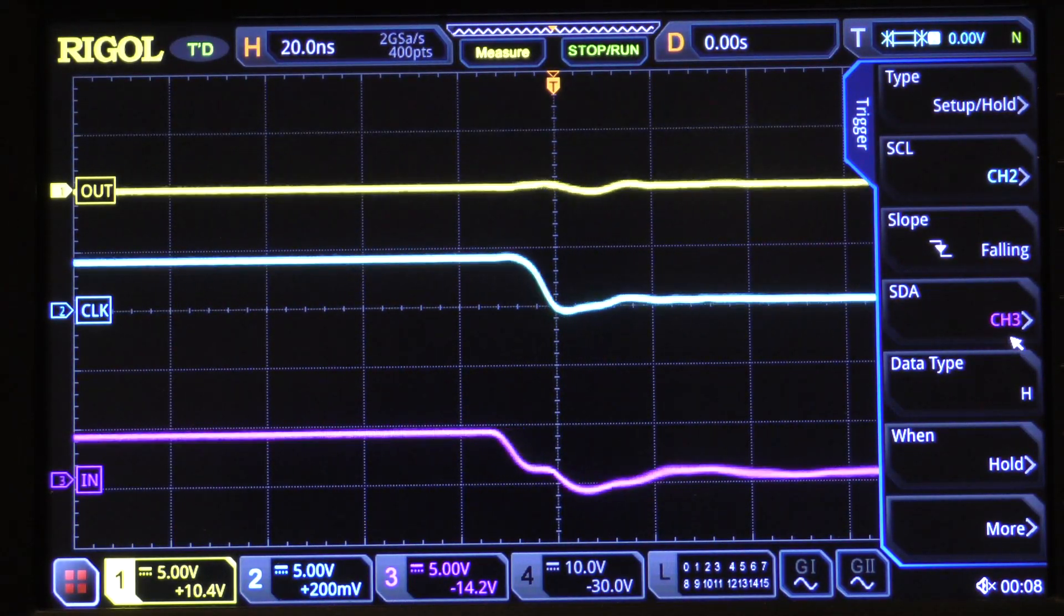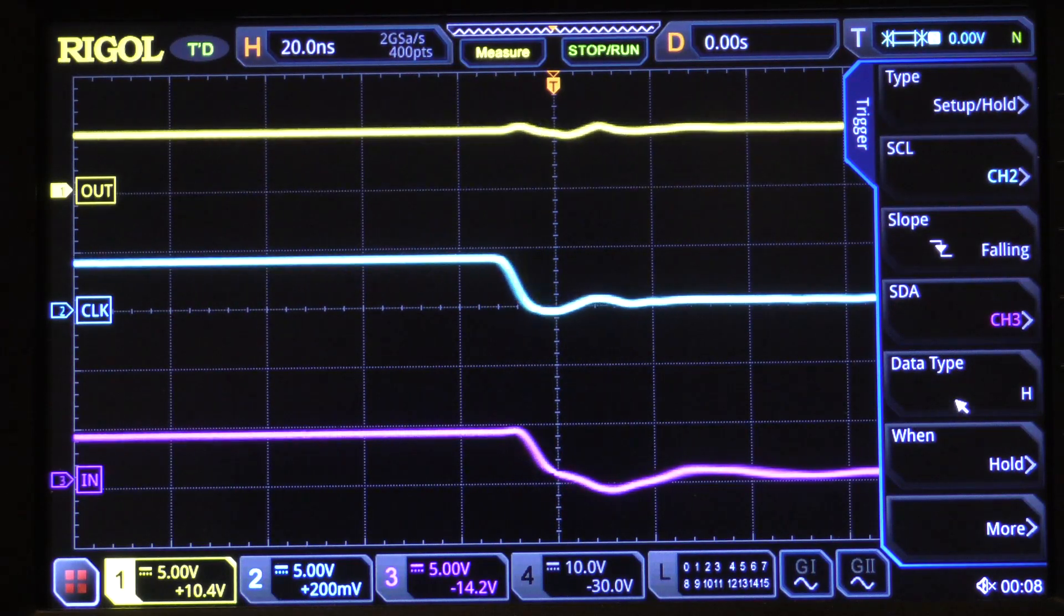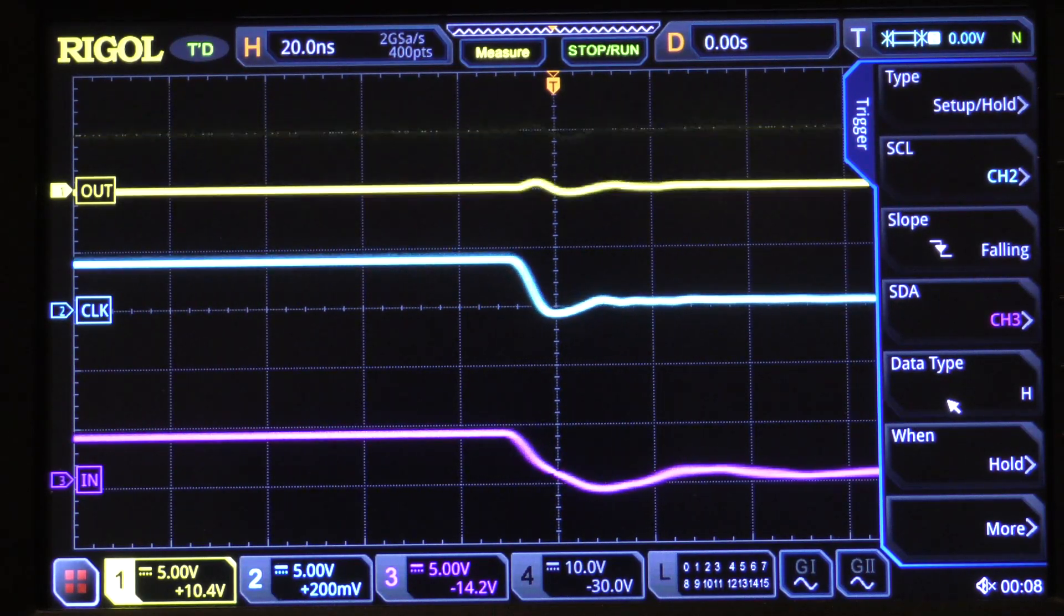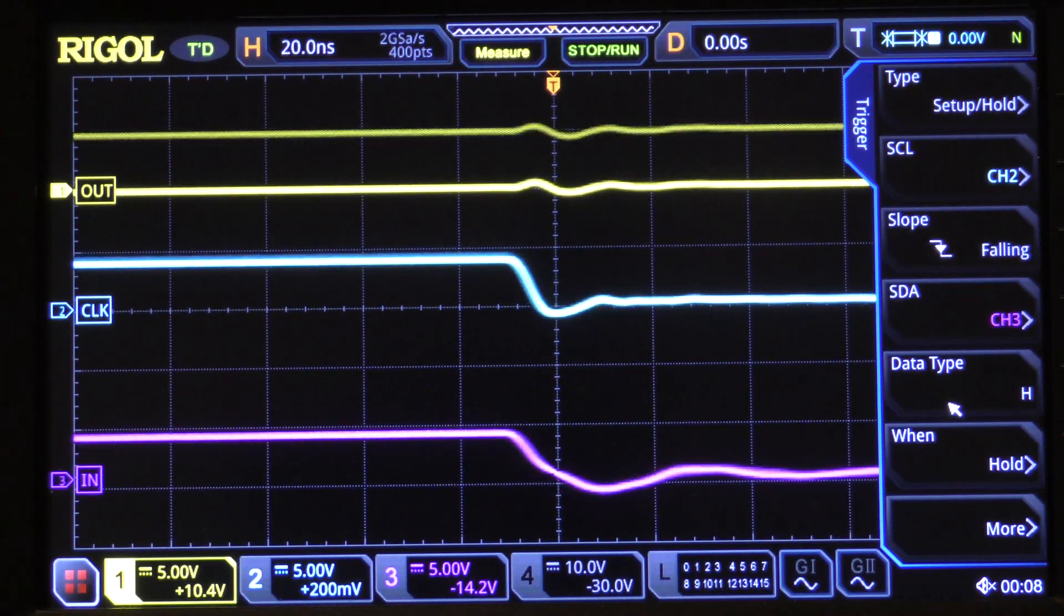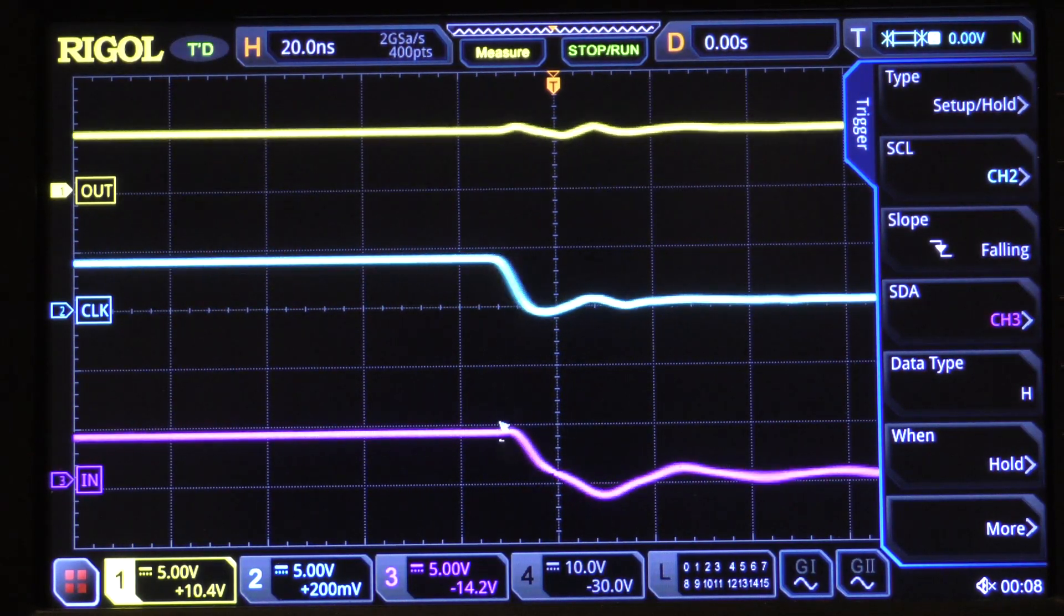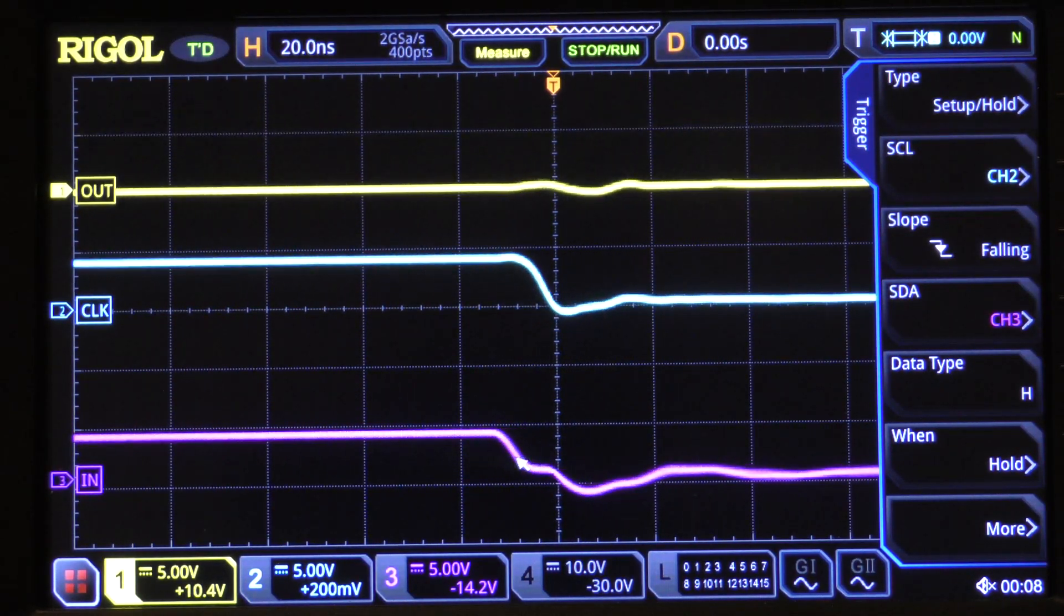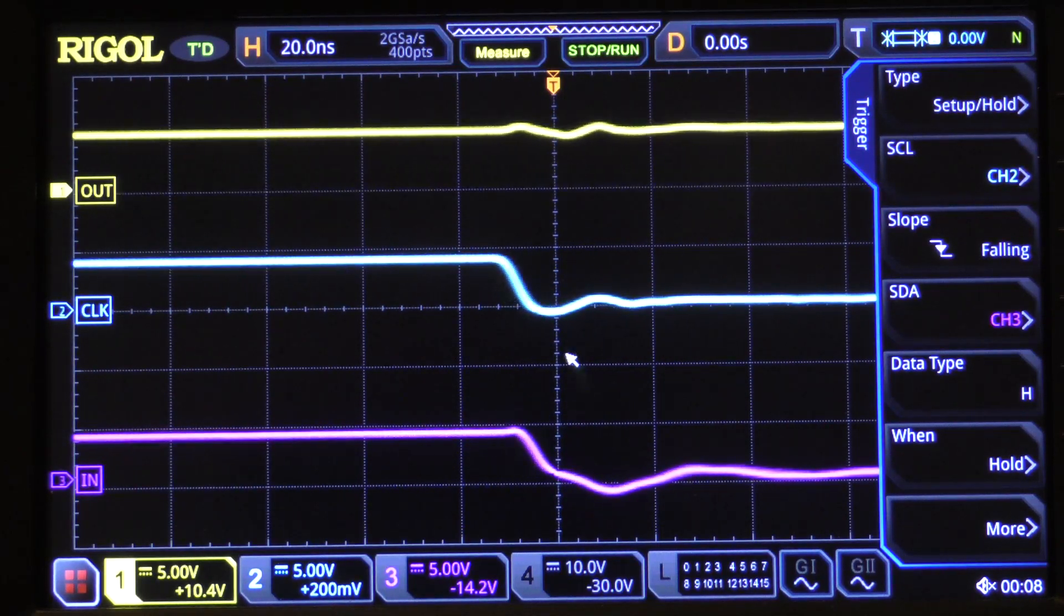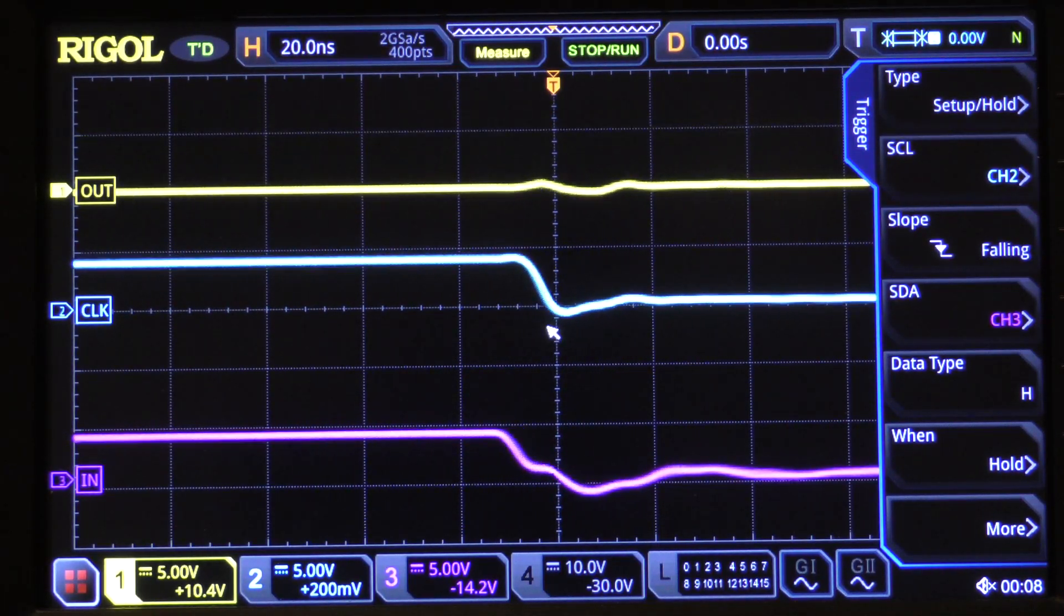Then we have to set up the data channel. Well, the data channel is channel 3. And then we set up the data type. The data type is high. How did we decide that? Because we are interested in the case when the data was a 1 at the time the clock changed.